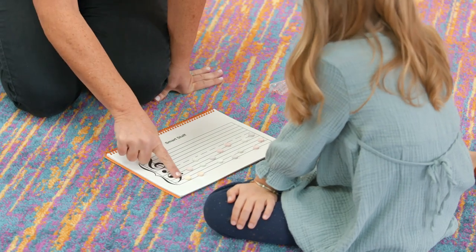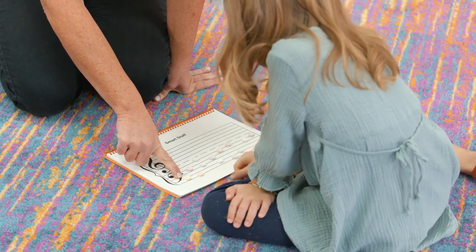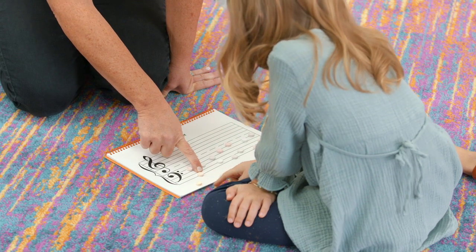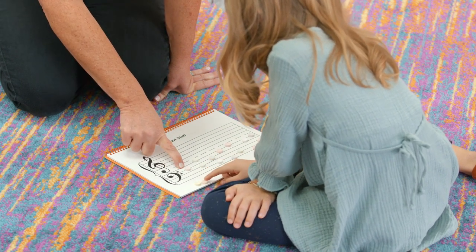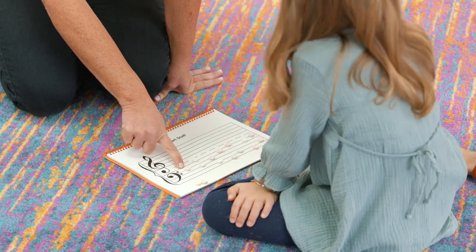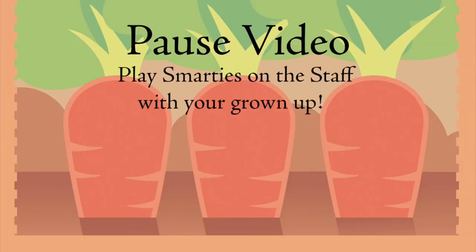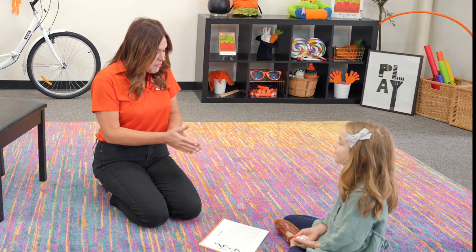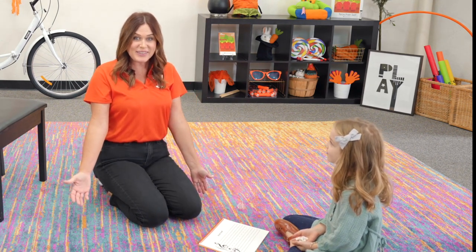Ruthie and I are going to do a few together. What's the first one? A — it is an A, it's the first space. What's this one? It's on the first line — G, it is a G. What's this one? It's on a line — F, it is an F. We found them all! Did you find all of the Smarties on your staff?